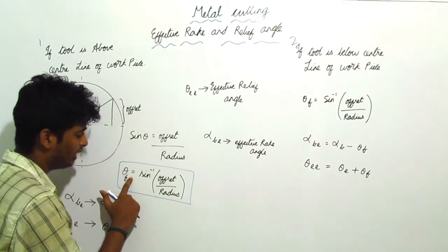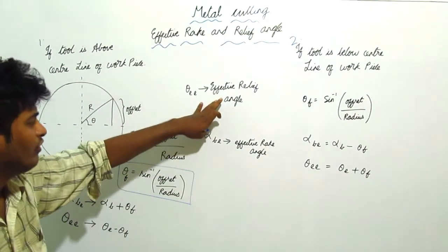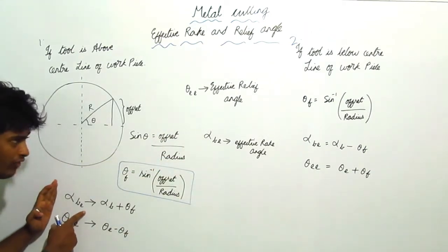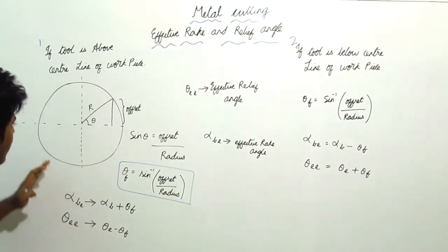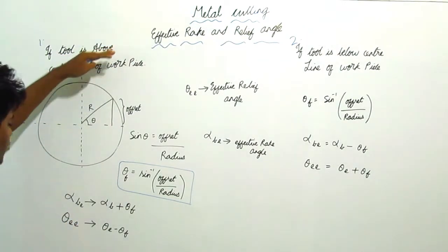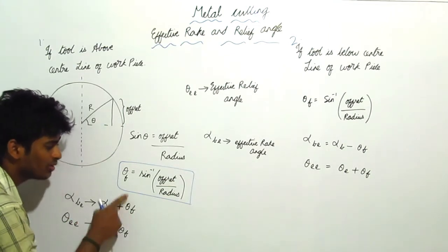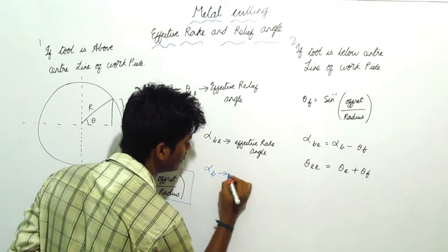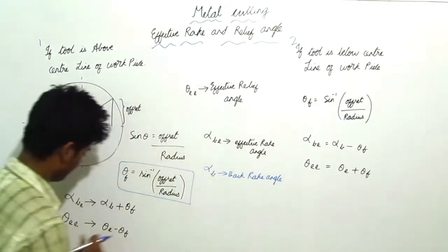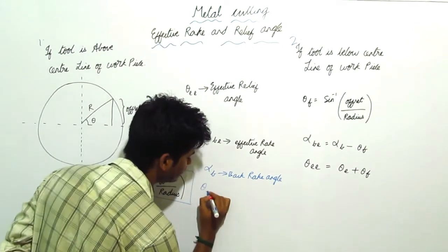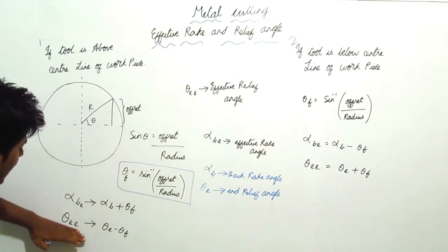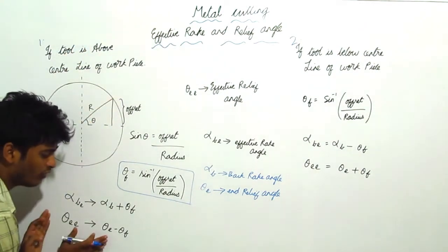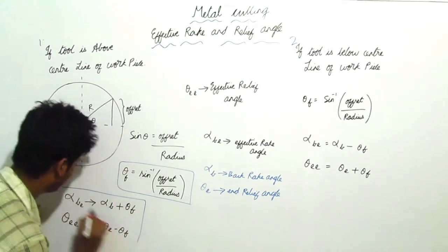With this offset angle θ_f, we find the Effective Relief and Effective Rake angles. For the Effective Back Rake angle (α_b), when the tool is above the center line of the workpiece, we add the back rake angle and θ_f. For the Effective Relief angle, when the tool is above the center line, we subtract θ_f. So these two formulas you have to remember.